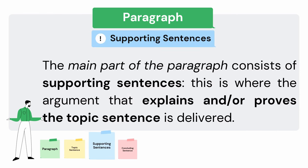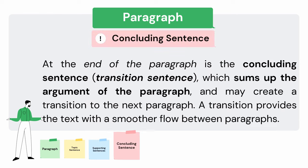Supporting sentences make up the main part of the paragraph. This is where the argument that explains and/or proves the topic sentence is delivered. At the end of the paragraph is a concluding sentence or transition sentence, which sums up the argument of the paragraph and may create a transition to the next paragraph. A transition provides the text with a smoother flow between paragraphs.